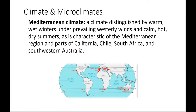In the majority of California, we live in a Mediterranean climate. Mediterranean climates are distinguished by warm, wet winters under prevailing westerly winds, and calm, hot, dry summers. We're experiencing a pretty calm, relatively hot, dry summer right now, and winters typically have a decent amount of storms that put down water — that's generally the only time Mediterranean regions receive precipitation.